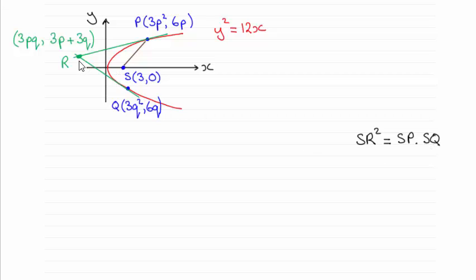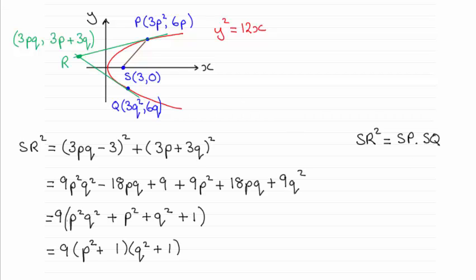So to get SR all squared, just apply Pythagoras's theorem. SR squared is equal to the difference between the X coordinates all squared plus the difference between the Y coordinates all squared.